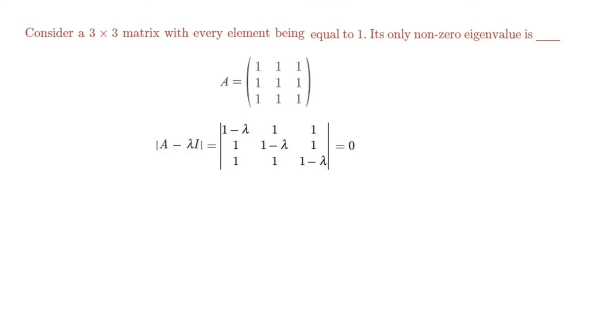Generally, we have one non-zero eigenvalue and two zero eigenvalues for this matrix A.